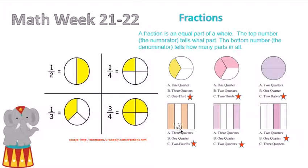Here we have one, two, three, four, so we have fourths in the second part of the name, and then we have two shaded in, so we name it two-fourths.